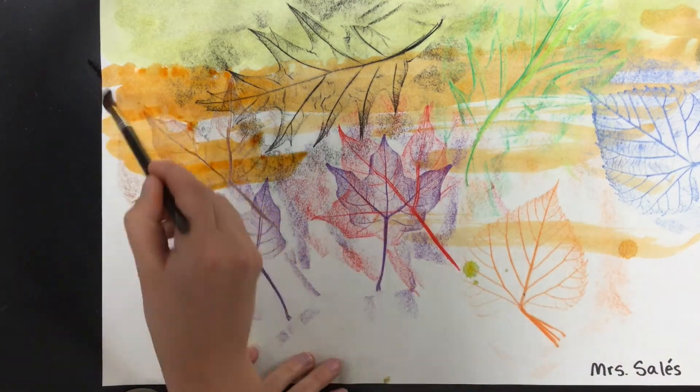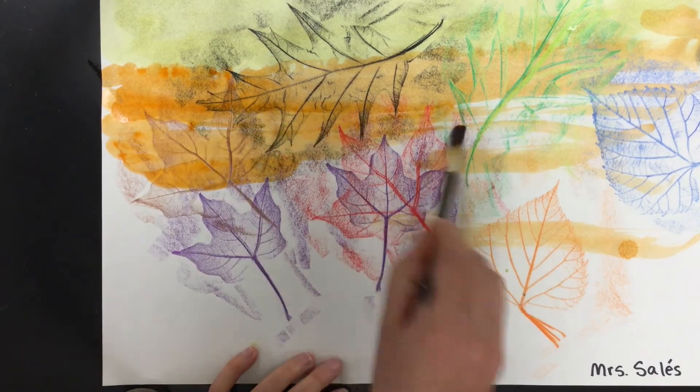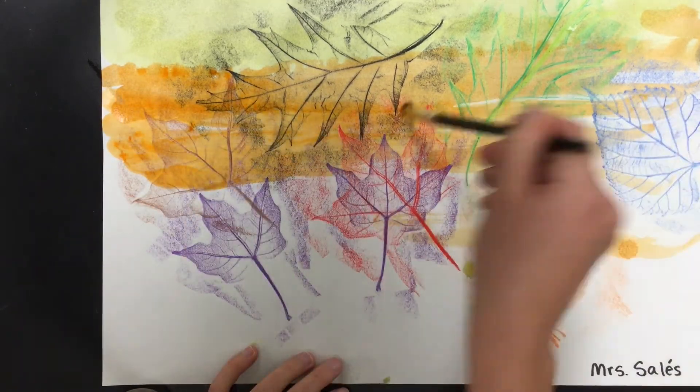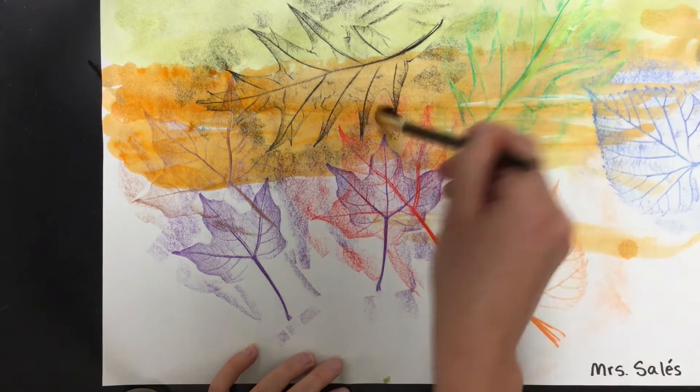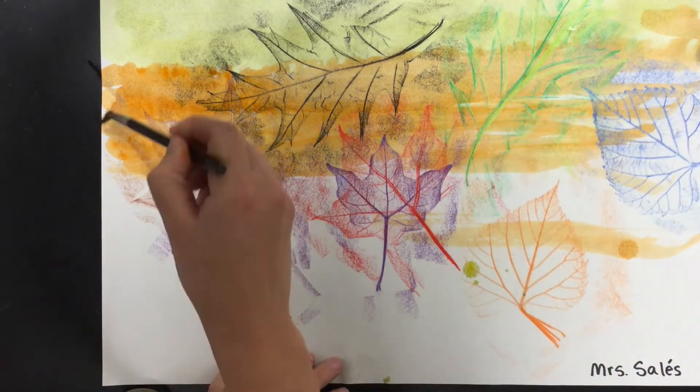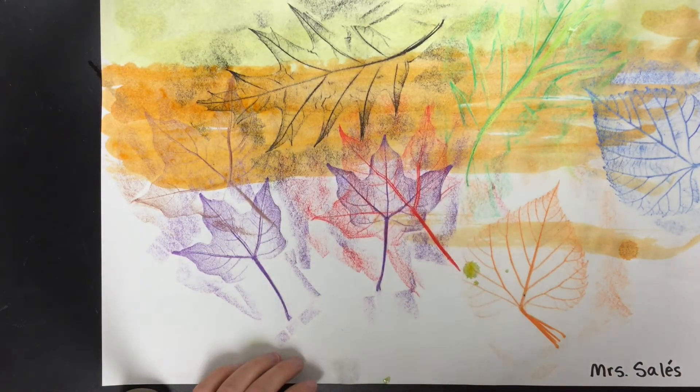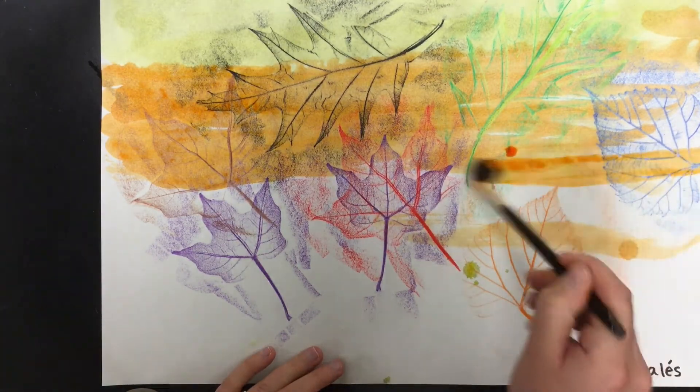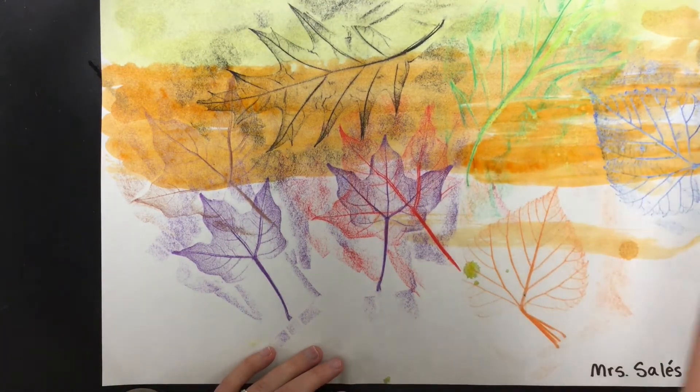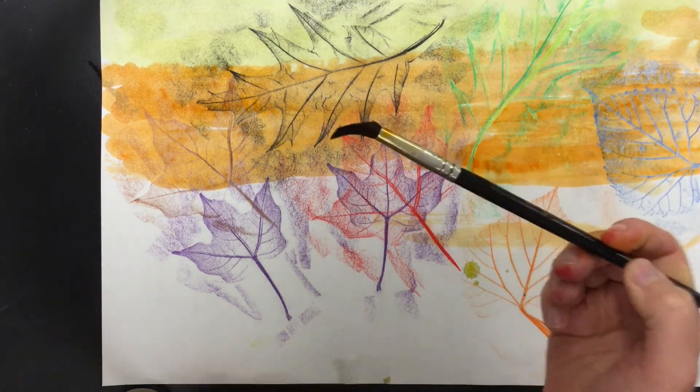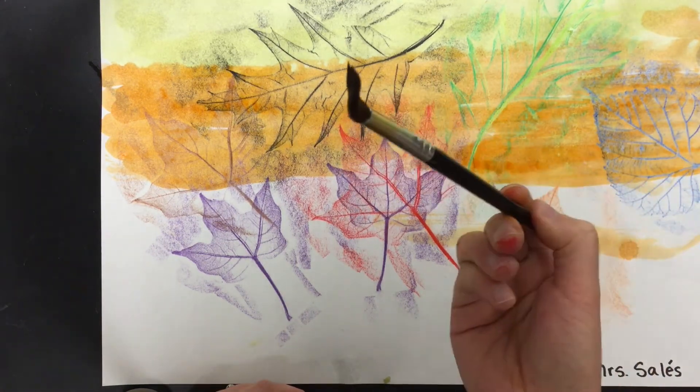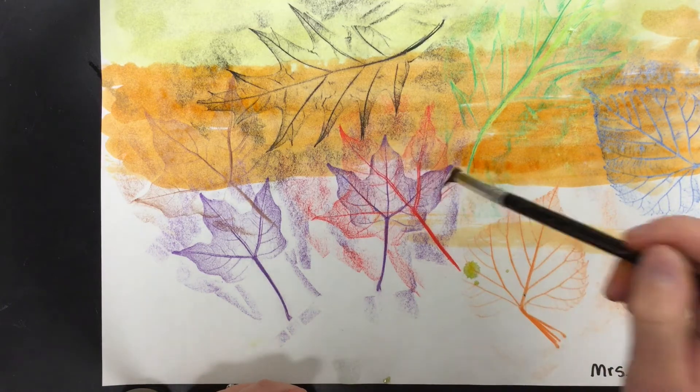Now as you're gently spreading your paint over your paper, I want you to check a couple of times to see if your brush has a good hair day. It's got a good hairdo. So I'll show you what I mean by that. Gently, gently spreading. Check your brush. That's a good hair day. It's nice and sleek and slicked back. Looking great.